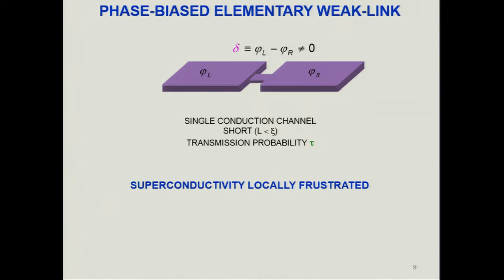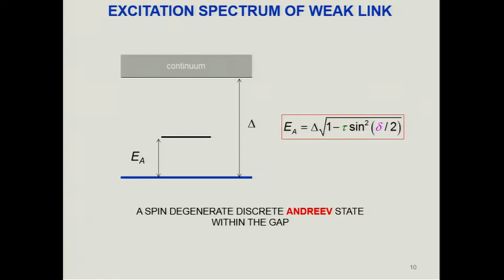When a phase difference is applied between the two superconducting reservoirs, superconductivity is frustrated. The system responds by changing locally the density of states. A discrete spin-degenerate level — the Andreev state — appears within the superconducting gap, with an energy that depends both on the transmission probability of the conduction channel and on the phase difference applied between the two reservoirs.